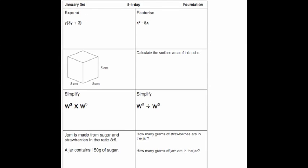So we're now going to look at the January the 3rd 5-a-day solutions for foundation. The first two questions are about expanding and factorizing expressions. The first one is y bracket 3y plus 2. So we'll do y times 3y, which is 3y squared, and y times 2, which is plus 2y. So the answer to the first question is 3y squared plus 2y. Just remember to multiply both the terms inside by the y.